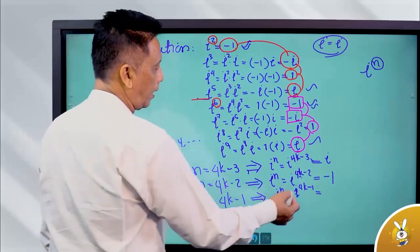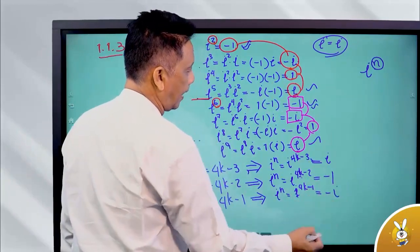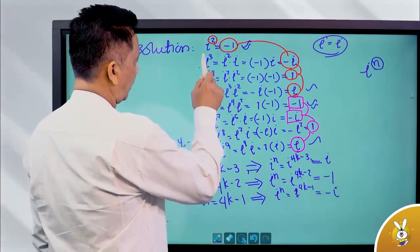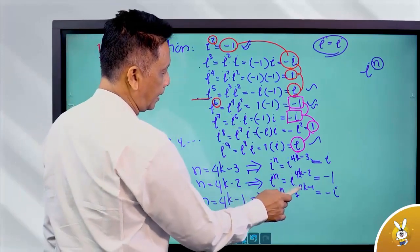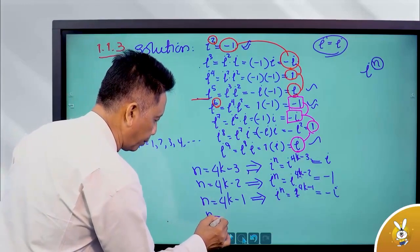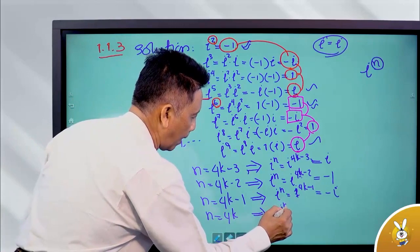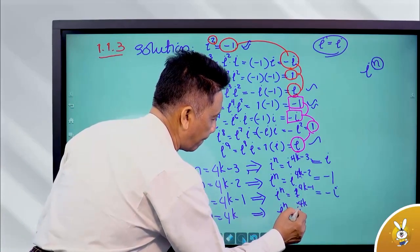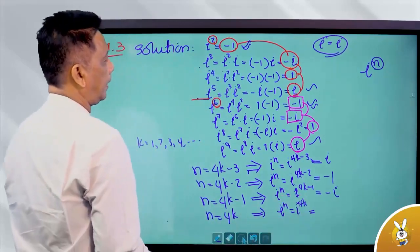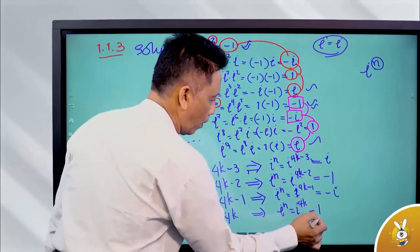One is three. I power three minus I. So three is equal to I power 4k minus 1. Seven is equal to I power 3. So you can have this value. Now I got n equal to 4k. That's n equal to 4k. 4k is full. One. That's n equal to one.